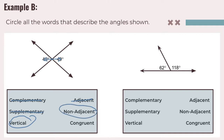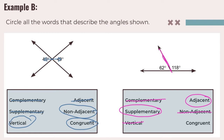Are they congruent? It's 49 and 49, so yes, they are congruent angles. Moving to the right-hand side: complementary — they do not add up to 90. However, 62 plus 118 does equal 180, so they are supplementary. Are they vertical? No, they're not across from each other. Are they adjacent? Yes — they share this vertex and this side, so they are adjacent, which means they can't be non-adjacent. Are they congruent? 62 and 118 are different numbers, so they are not congruent.